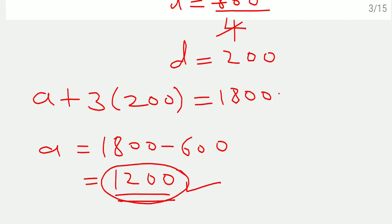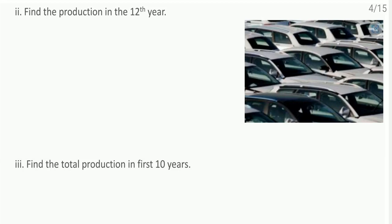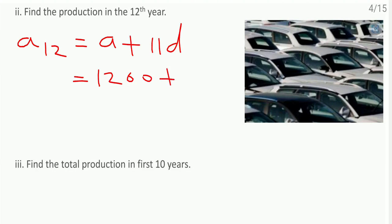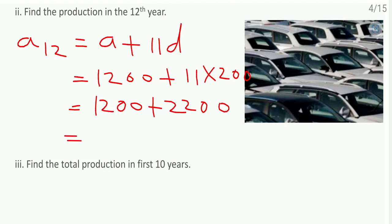Remember these two values: a equals 1200 and d equals 200. Now find the production in the 12th year. a12 equals a plus 11d, which is 1200 plus 11 times 200, equal to 1200 plus 2200, which comes as 3400. The production in the 12th year is 3400 cars.